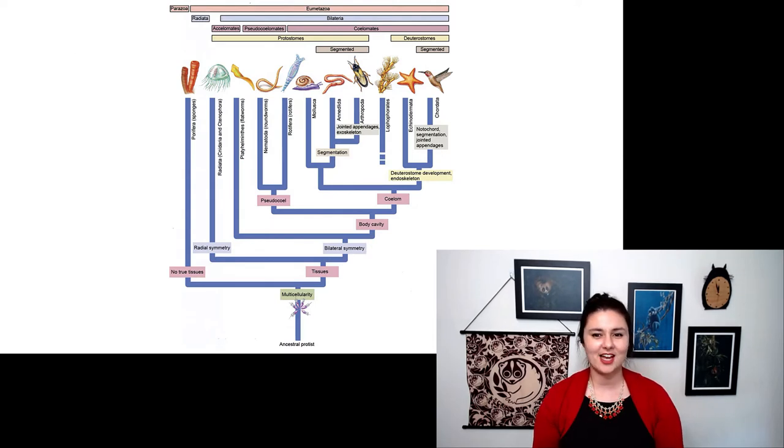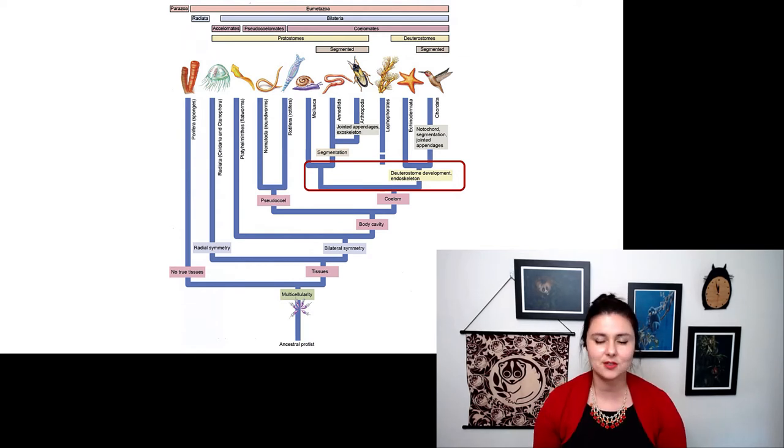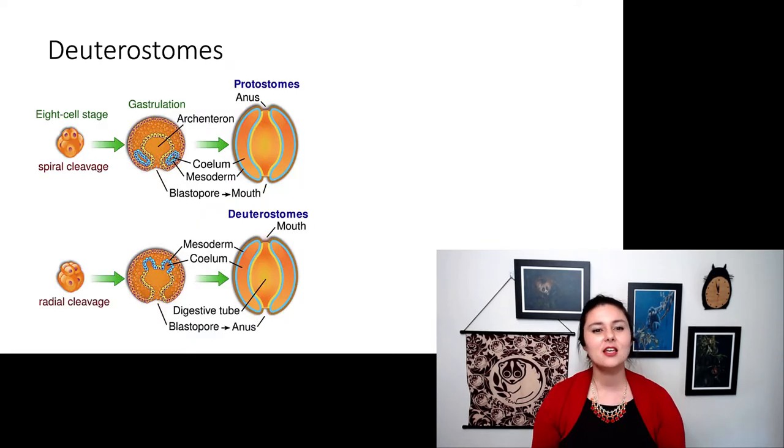So let's look at what's next. Now we have a specific type of development. We specifically are deuterostomes. Let's look at what that means. Here are deuterostomes. We're contrasting them with protostomes on the top. And really it just means the type of way that we develop in the very early stages.